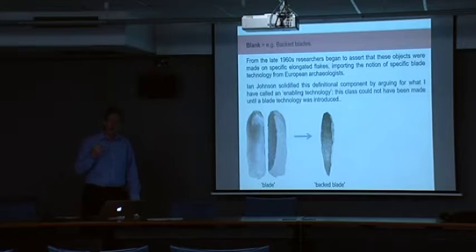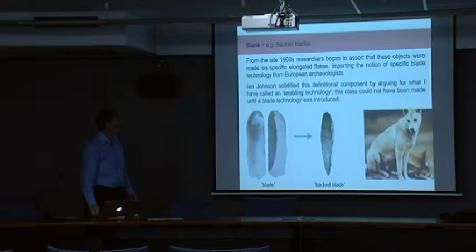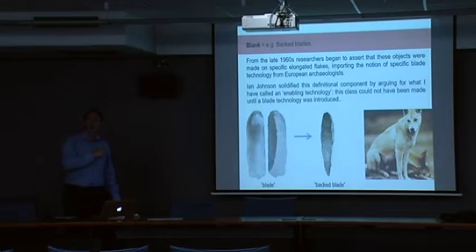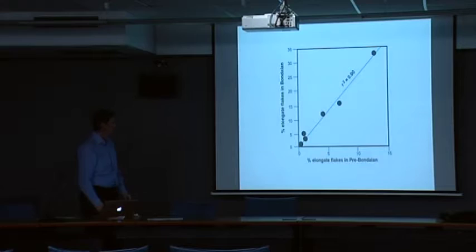From the 1960s onwards, people imported a kind of concept that derived from Europe that these backed retouch blunted items were made on a particular kind of blank, particularly the long blady things. And this was offered as an explanation for why these objects appeared in the archaeological record at a certain point. There was an enabling technology. You couldn't make them without a blade technology. And as soon as you got a blade technology, you could then produce the blanks that would enable you to do them. And in the 1970s, that made everyone feel happy because they could say, well, the dingo was introduced four to five thousand years ago and the blade technology came with it. And once the blade technology was in Australia, then you could make the backed artefacts and so on and so on.